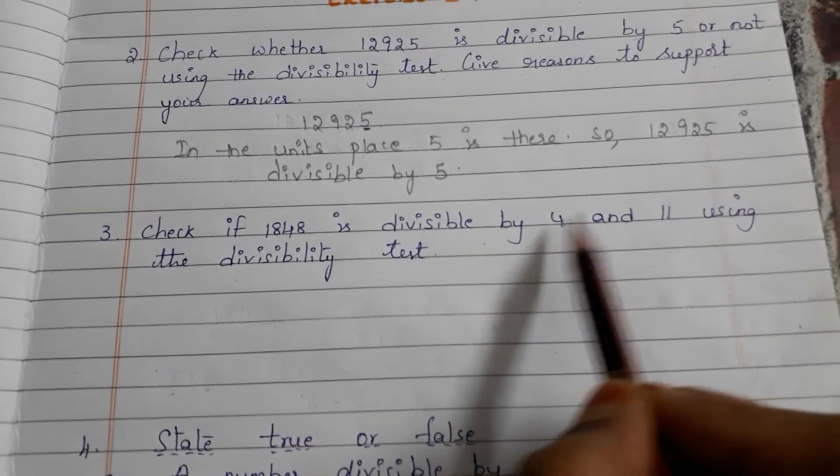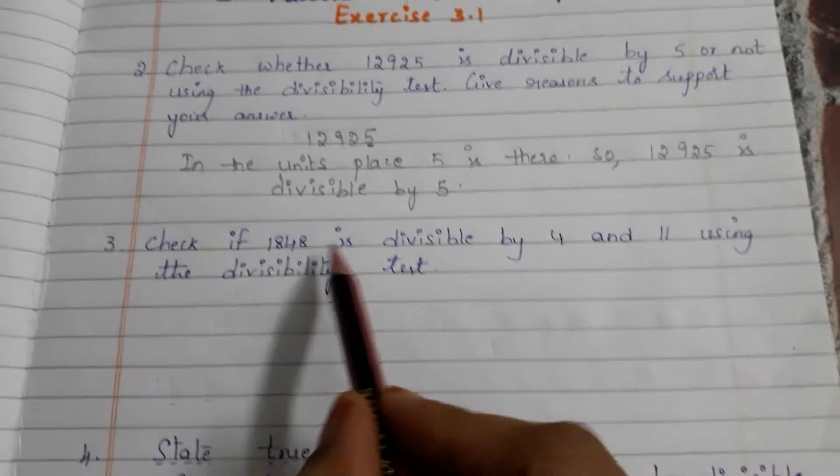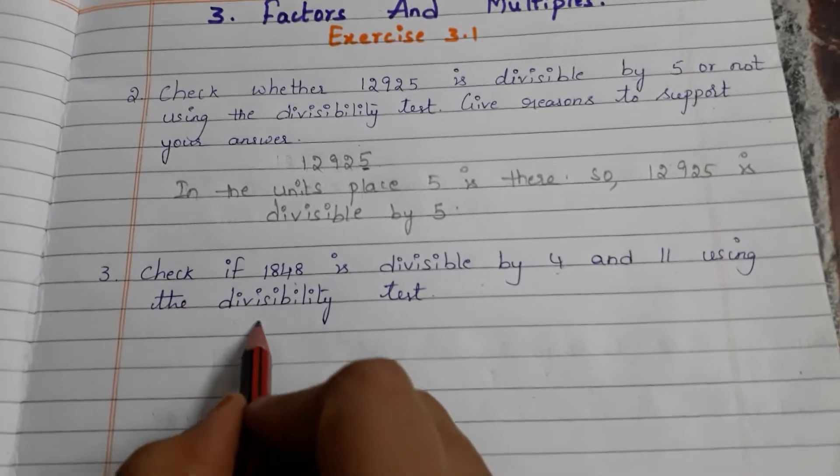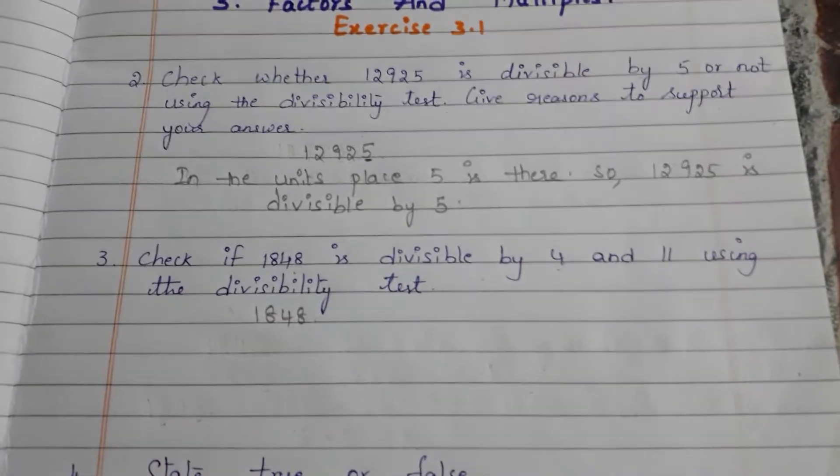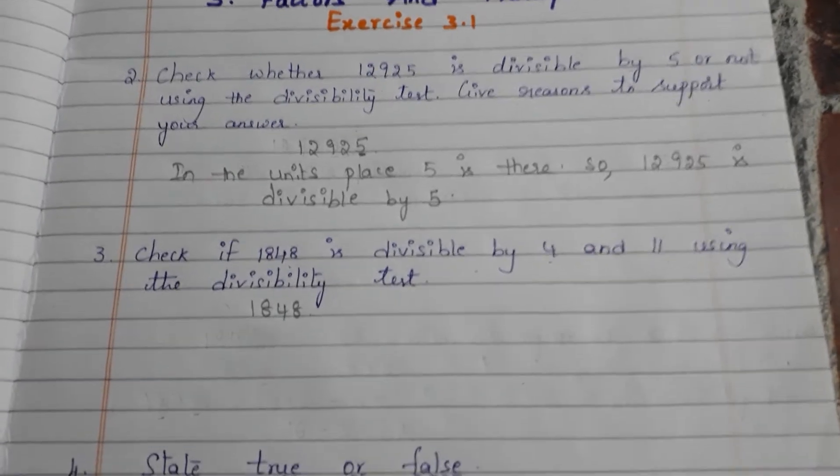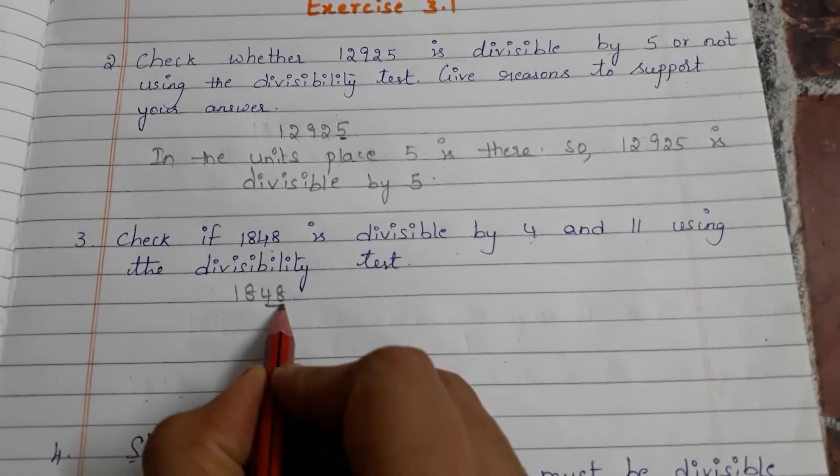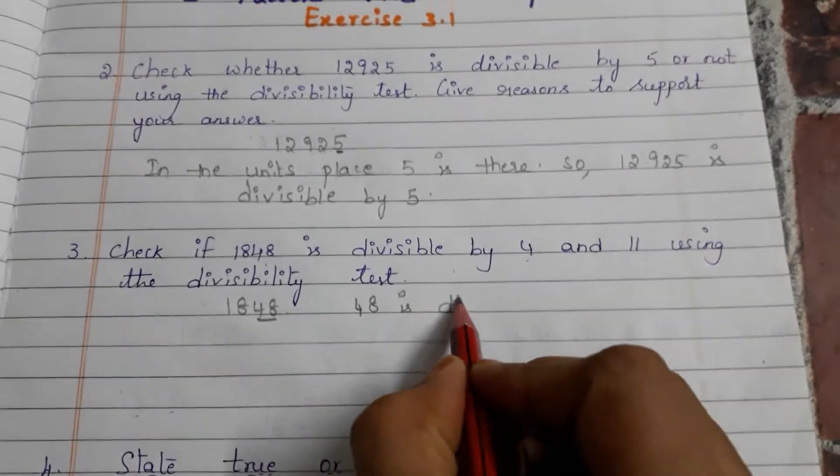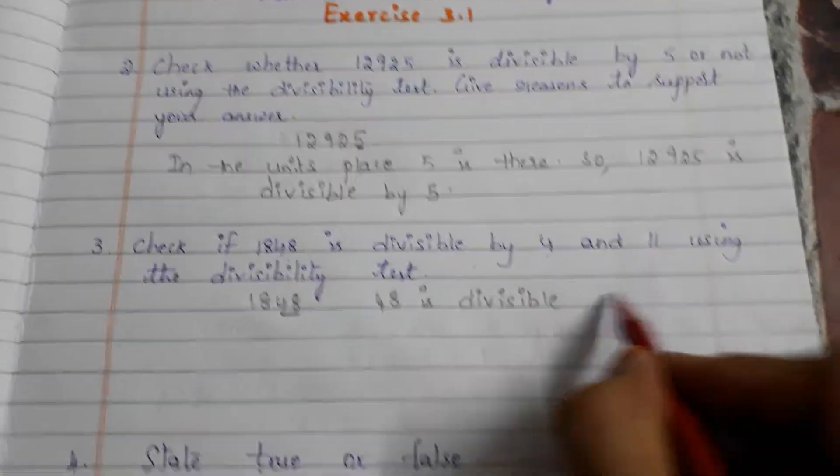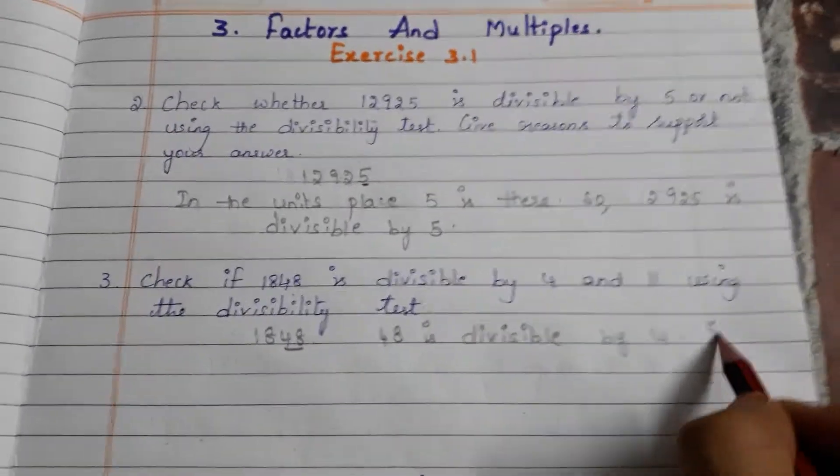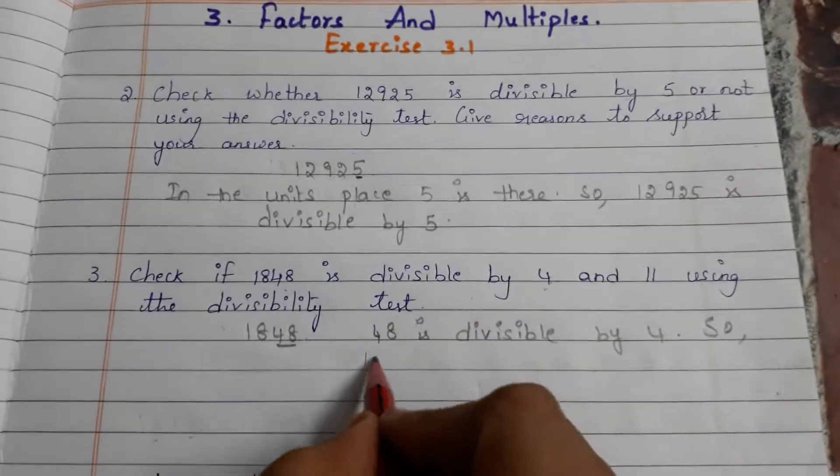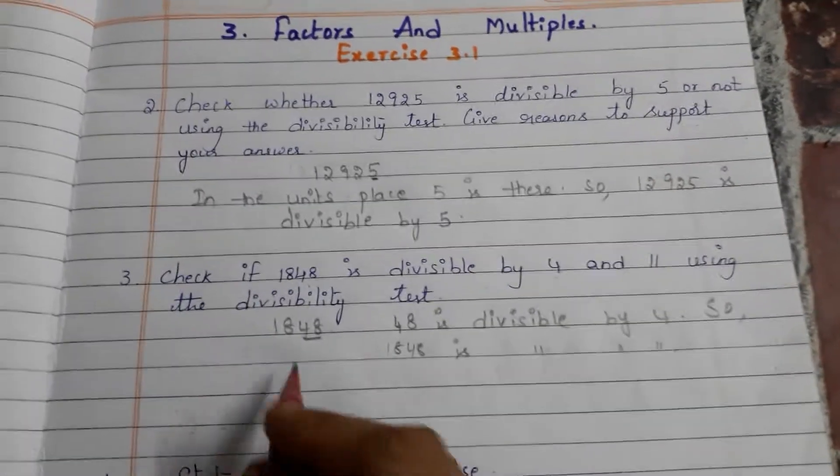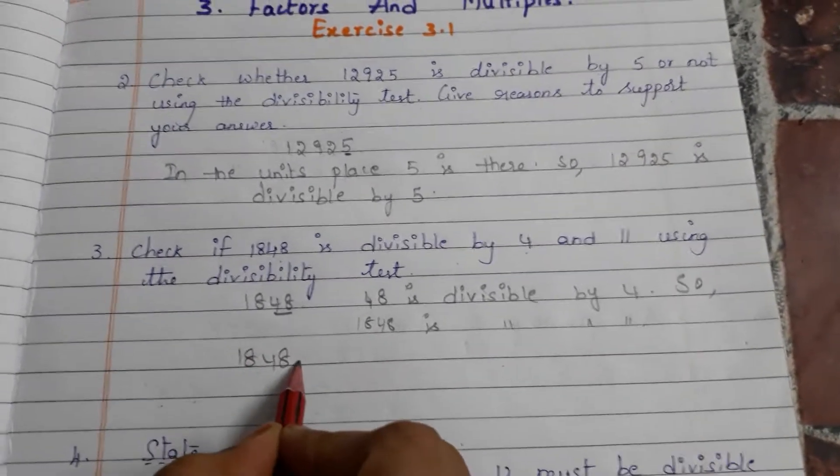Let us go to the third one. Check if 1848 is divisible by 4 and 11 using the divisibility test. We have to check whether this number is divisible by 4 as well as 11. First take the number 1848 and recollect the divisibility rule for 4: the last two digits should be divisible by 4. Here 48 is divisible by 4, so 1848 is divisible by 4.